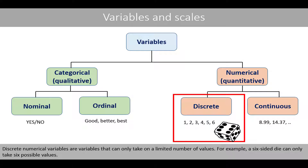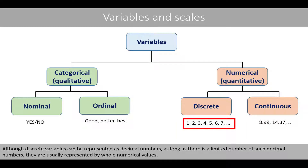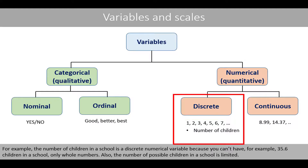Discrete numerical variables are variables that can only take on a limited number of values. For example, a six-sided die can only take six possible values. Although discrete variables can be represented as decimal numbers, as long as there is a limited number of such decimal numbers, they are usually represented by whole numerical values. For example, the number of children in a school is a discrete numerical variable because you can't have, for example, 35.6 children in a school — only whole numbers.